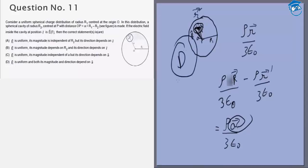This is the standard result you already know: ρa/3ε₀ is the field inside the cavity. Thank you.